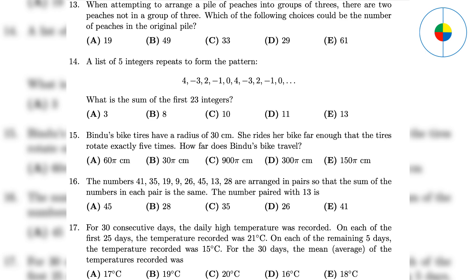Question 14: These five numbers — 4, -3, 2, -1, and 0 — with a sum of 2, repeat 4 times. So the sum of the first 20 integers is 2 times 4, which is 8. Then the next three integers are 4, -3, and 2, with a sum of 3. So the sum of all integers is 8 plus 3, which is 11.